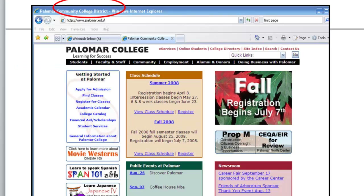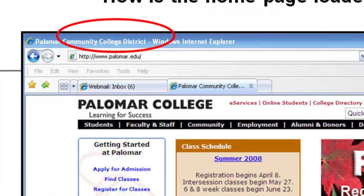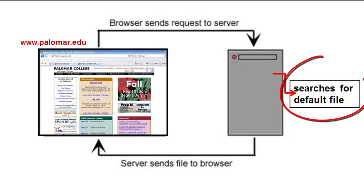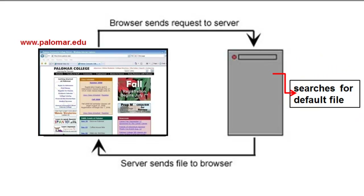Supposing we didn't have a specific file — supposing we were just typing in something like www.palomar.edu. How would the server know which page to send back? It sends a request to that directory on the server, and if no page is specified, it will search for what is called the default file. Every folder or directory on the web server has a default file, and if no file is requested, that is what will be sent back.